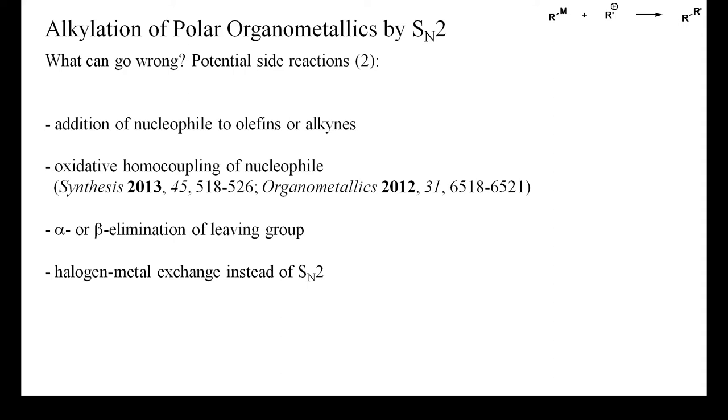Some sterically demanding organometallics are not generally alkylated by alkyl halides, but just undergo halogen-metal exchange. Isopropyl Grignard reagents are often used for this purpose.